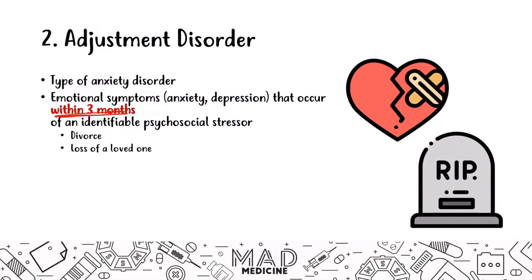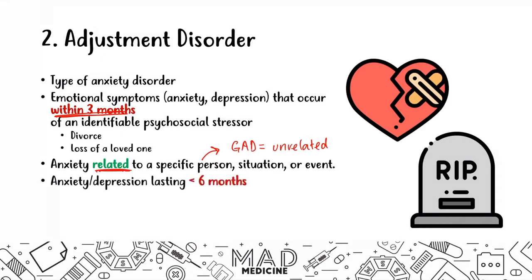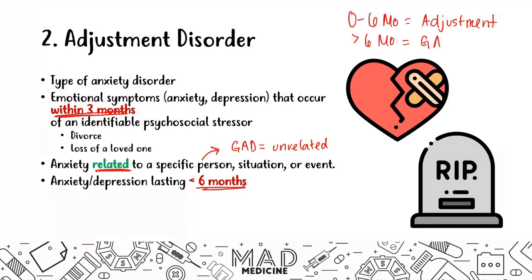If they feel anxiety within three months of a stressor, that is an adjustment disorder. Anything more is going to be other types of issues. This anxiety is going to be related to the specific situation. Remember, in GAD the anxiety was unrelated to anything. In adjustment disorder, it is connected to something that happened in their lives that changed their living situation. The anxiety and depression have to last for less than six months — so zero to six months is adjustment disorder. If it's greater than six months, you're going to have generalized anxiety disorder. That time frame is very important to understand.